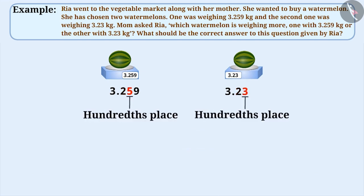So, we will compare the digits in the hundredths place. Here, the digit at hundredths place in 3.259 is 5 and the digit at hundredths place in 3.23 is 3.